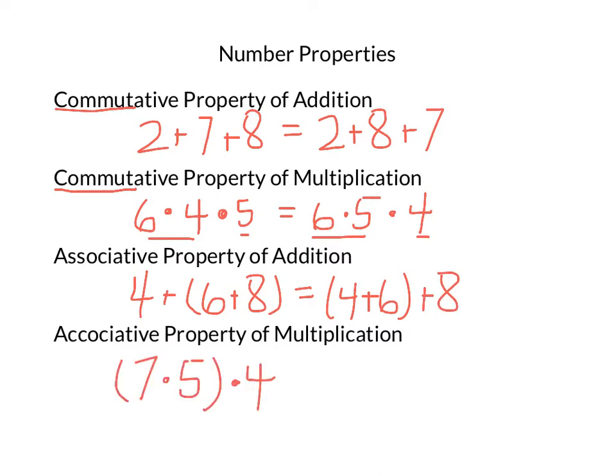And in this multiplication one, I can see that doing 5 times 4 gives me 20, so that one would be easier to do first. So if I move those parentheses, 7 times 5 times 4, that allows me to do 5 times 4 and get 20, and then multiply by 7 and get 140.